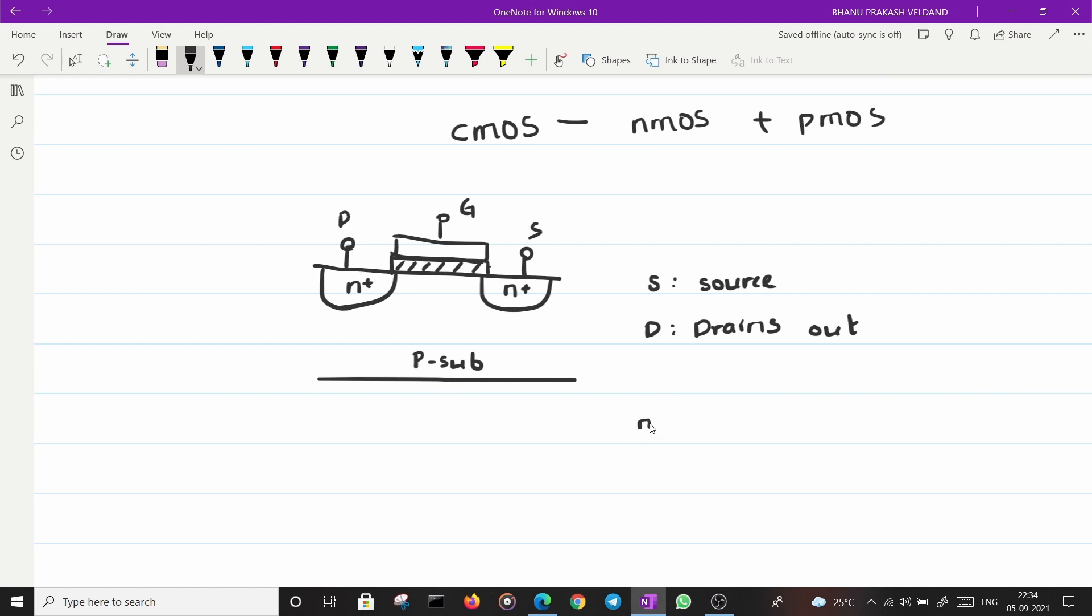Let's see what the drain and source would generally mean. Source is a source of carriers whereas drain drains out the carriers. If you take an example of NMOS electrons are the carriers. So source is the source of the carriers. If my electron transfer is happening in this direction, my current direction would be this, opposite of electrons. Drain is draining out the carriers.